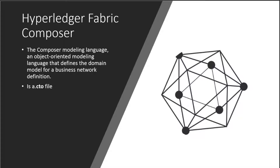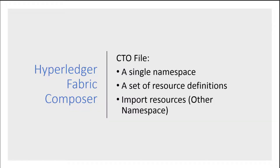When it comes to Composer, it uses a modeling language that is object-oriented. It's the language that defines the domain for a specific business network definition — basically what is called a CTO file. A CTO file is comprised of several factors: a namespace where you declare the resources, resource definitions which could be transactions, participants, assets, and events, and thirdly, the ability to import resources from other namespaces.